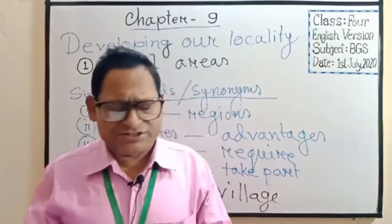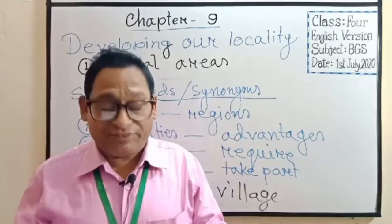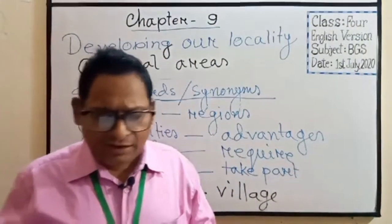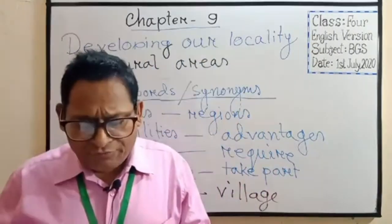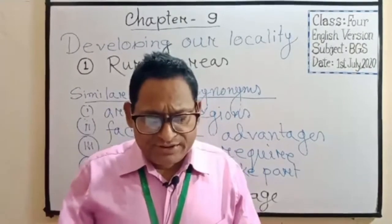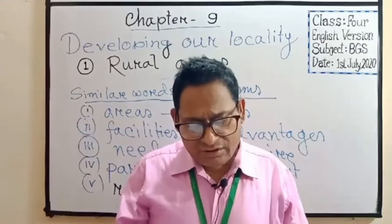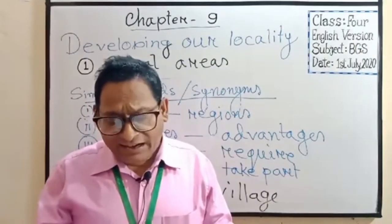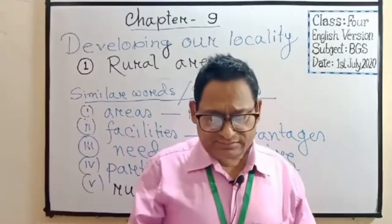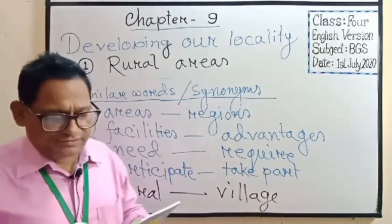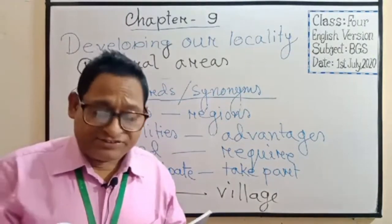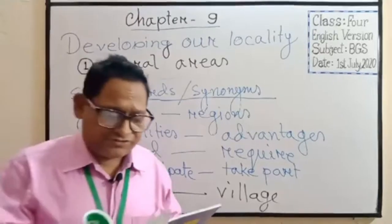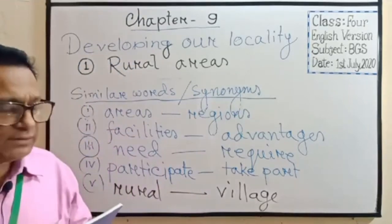Number one: educational institutions. Two: medical facilities. Three: roads, bridges, bamboo pathways, culverts. Number four: tube well for safe drinking water. Five: sanitary toilet in every house. Six: places to throw waste. Seven: drains and canals to get rid of stagnant water. Eight: ponds. Nine: water irrigation in fields. Ten: electricity. Eleven: religious buildings. Twelve: cultural institutions. Thirteen: village markets. Fourteen: playgrounds.